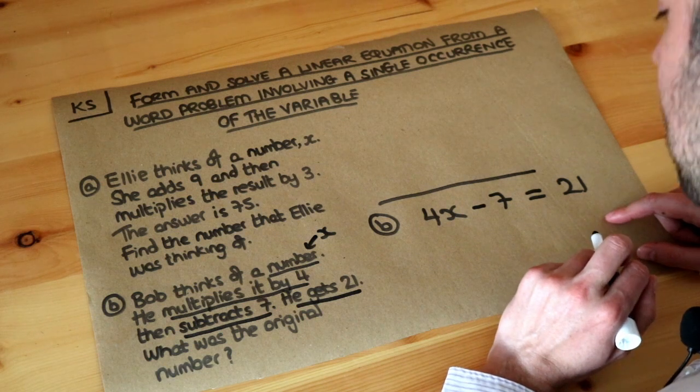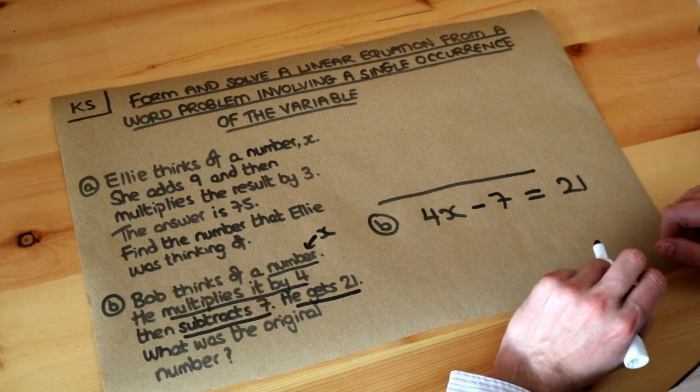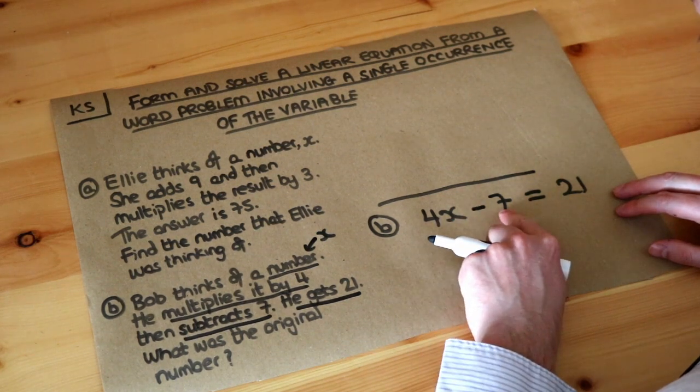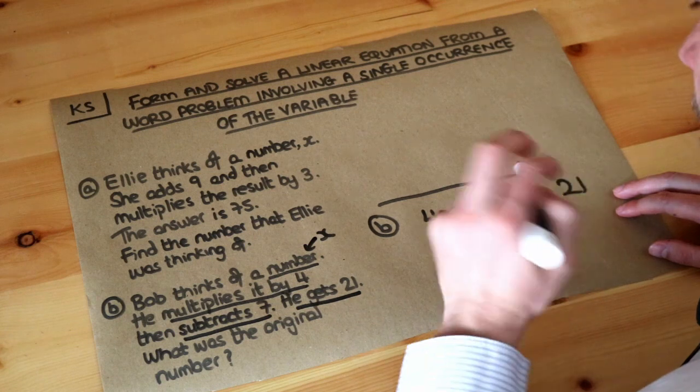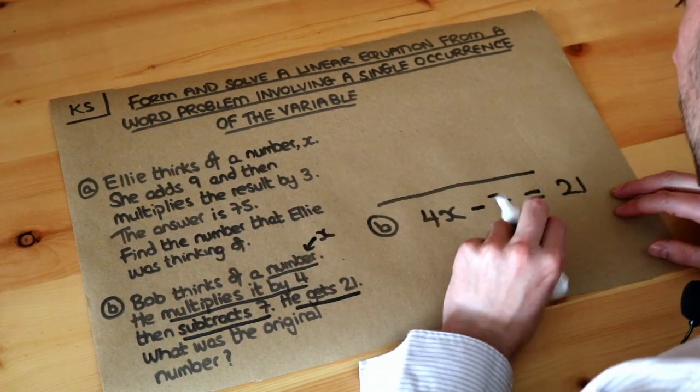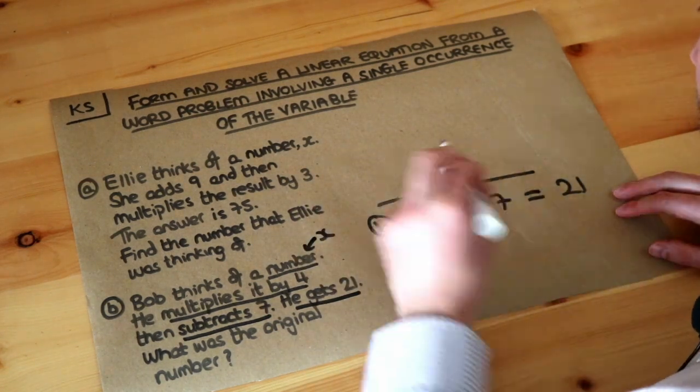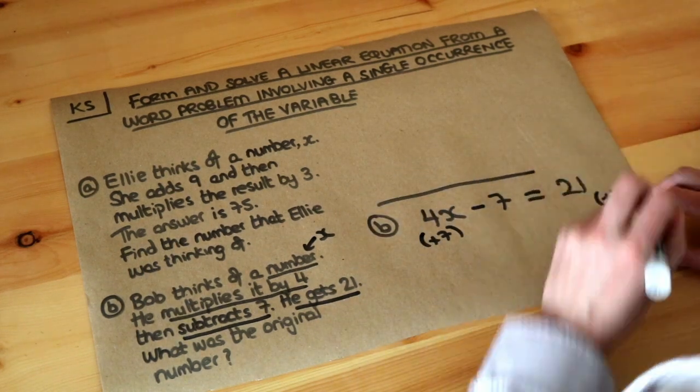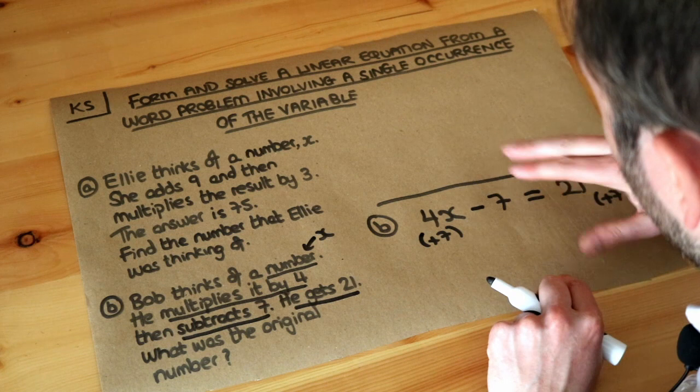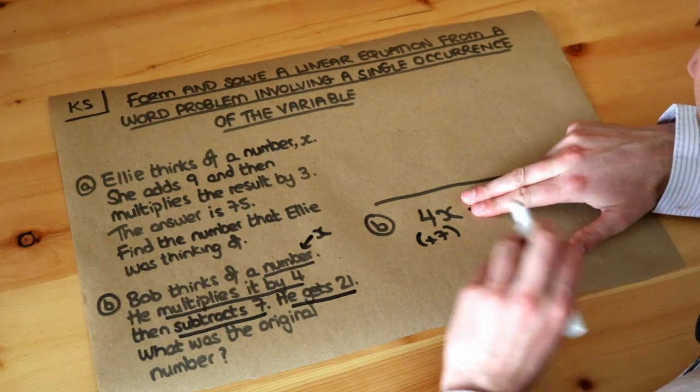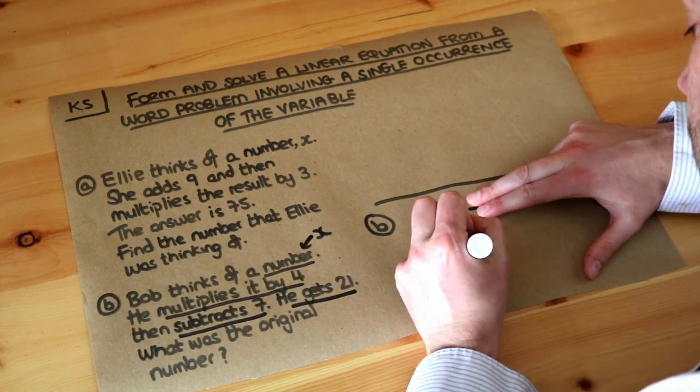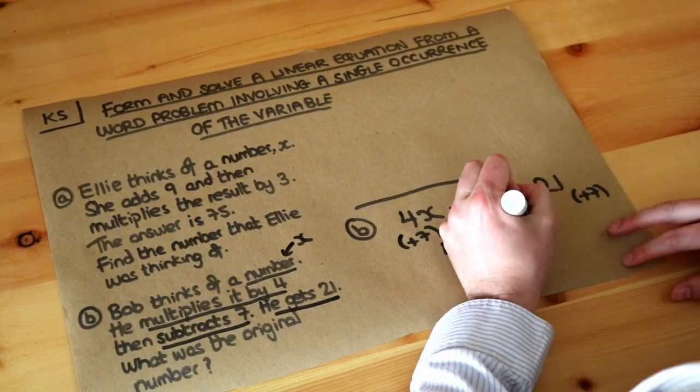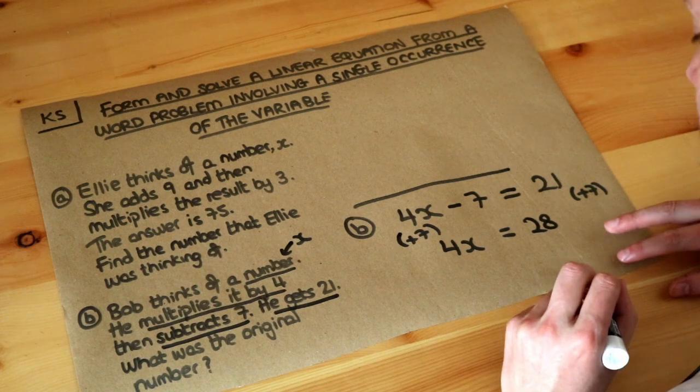Now we need to solve this equation. x has been multiplied by 4 and we're subtracting 7. That was the last thing done to x, so we undo the last thing. The opposite of minus 7 is to add 7 to both sides. If we add 7 on the left hand side, it cancels with the minus 7, leaving 4x. On the right hand side, 21 plus 7 equals 28.